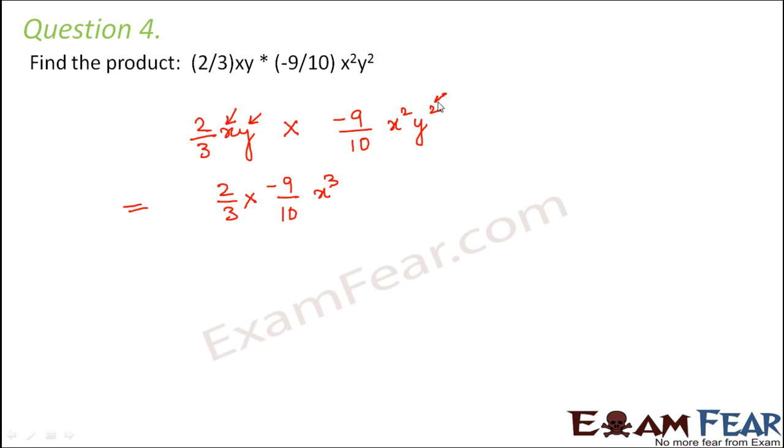Now 2 into -9, so 3 goes into 9 and 5 goes into 10, so this is equal to -3/5 x³y³. Thank you.